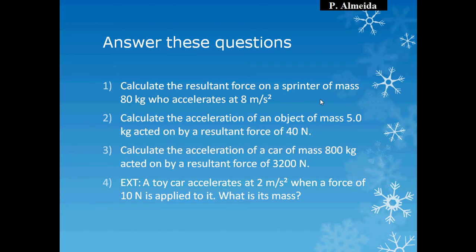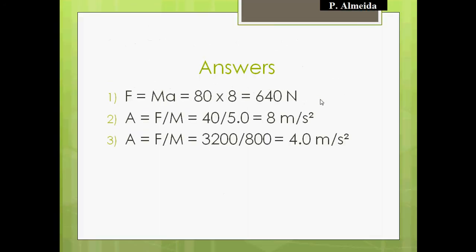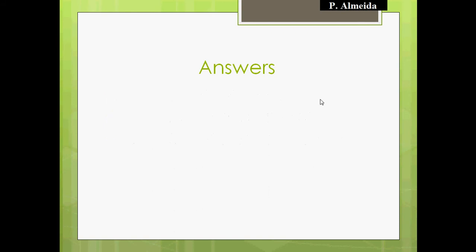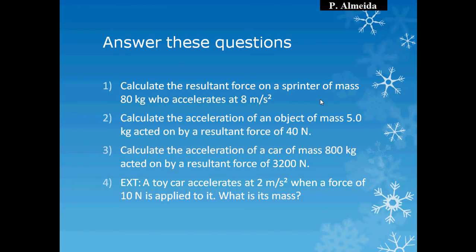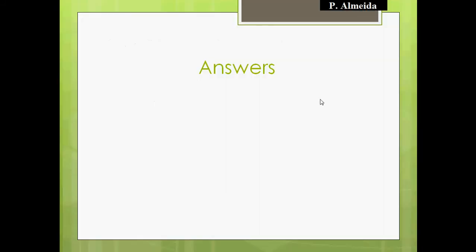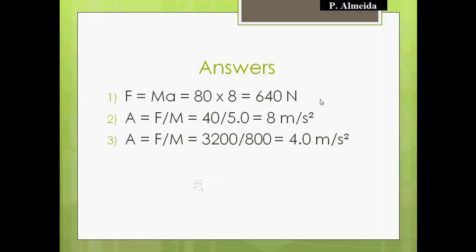Question three: calculate the acceleration of a car of mass 800 kilograms acted on by a resultant force of 3200 Newtons. Acceleration equals force over mass: 3200 over 800 gives 4 meters per second squared — 3 marks. Question four: a toy car accelerates at 2 meters per second squared when a force of 10 Newtons is applied. Mass equals force over acceleration: 10 over 2 gives 5 kilograms.